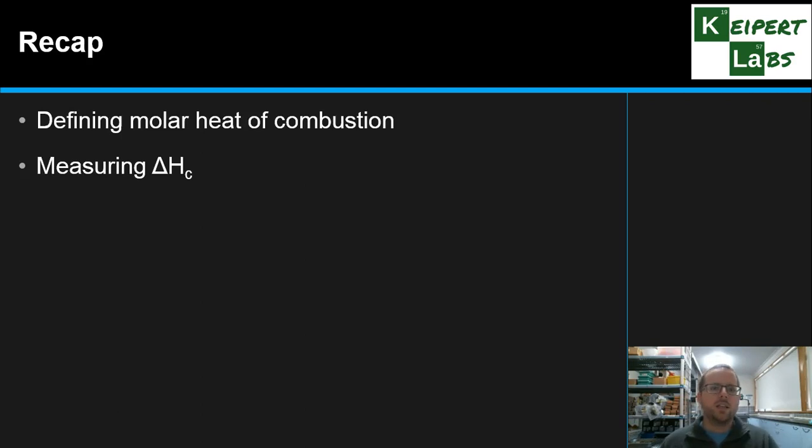So just to recap, we defined what we mean by molar heat of combustion, or delta Hc. We looked at experimentally how we can measure it using a technique called calorimetry, measuring the amount of energy absorbed by a sample of water from the burning of that fuel. We looked at the formulas that we used to calculate it, so Q equals MC delta T, and then Q over N or Q over M, and we went through an example. All right, thanks very much for watching. Bye for now.